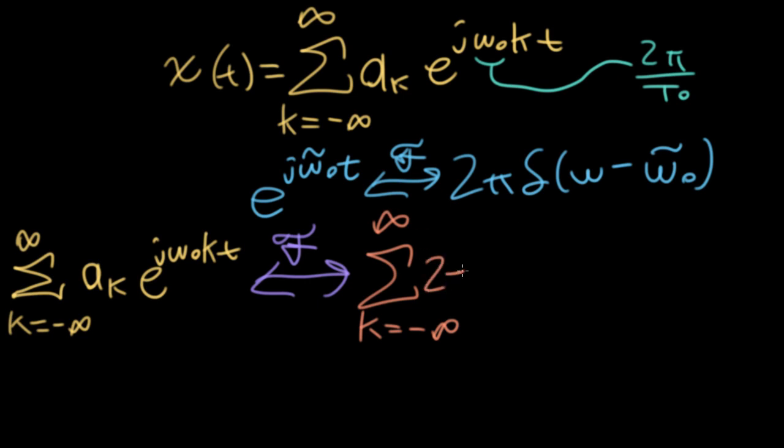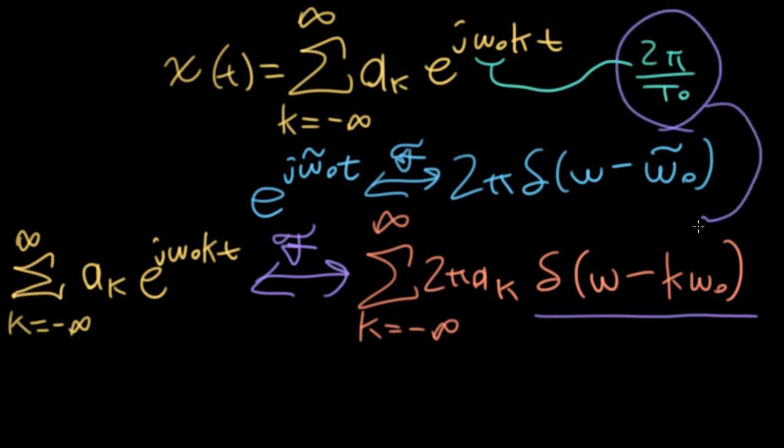I can write the Fourier transform on the other side here as basically just multiplying all of the Fourier series coefficients by this 2 pi and writing these delta functions. So the Fourier transform of a periodic signal has the form of a bunch of delta functions that are at integer multiples of the fundamental frequency. Here we're writing it in radians per second. But if needed, you can plug in 2 pi over t naught for omega naught if that's more convenient.